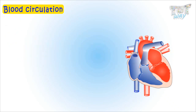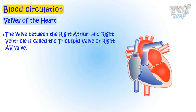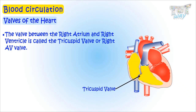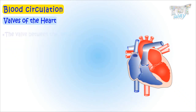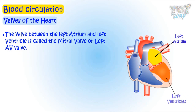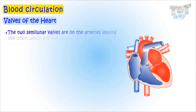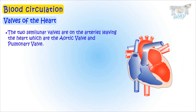Now let's learn about the valves of the heart. The valve between the right atrium and right ventricle is called the tricuspid valve or right AV valve. The valve between the left atrium and left ventricle is called the mitral valve or left AV valve. And two valves are on the arteries leaving the heart: the aortic valve and the pulmonary valve.